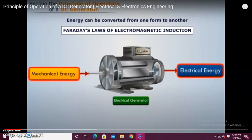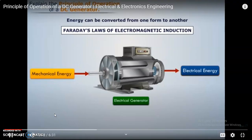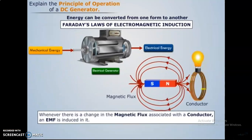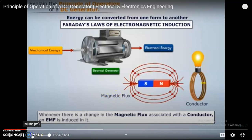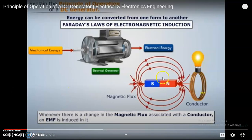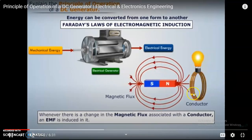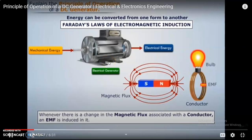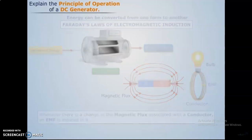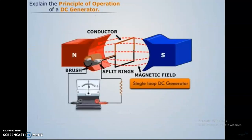Just look at this diagram — how it rotates. The input is mechanical energy and the output you are getting is electrical energy. There is magnetic flux, and we have a conductor. Whenever the magnetic flux is associated with the conductor, there will be a change in EMF, so the EMF is induced in it. Because it is in a closed loop, there will be a current flow, so the bulb is glowing. There is a permanent magnet with S and N poles, brushes, and a conductor.